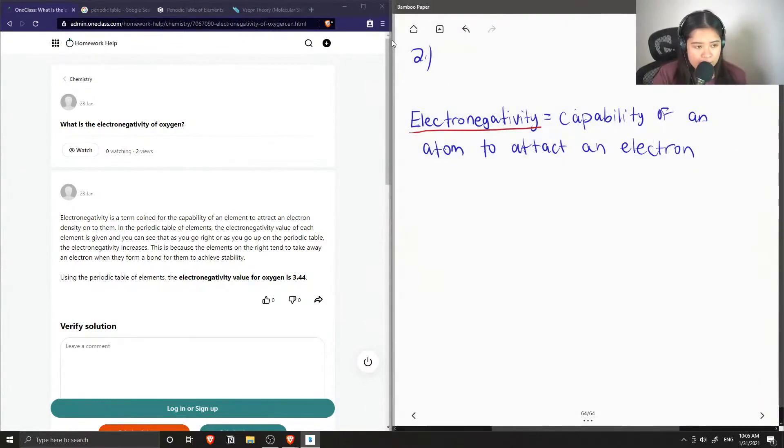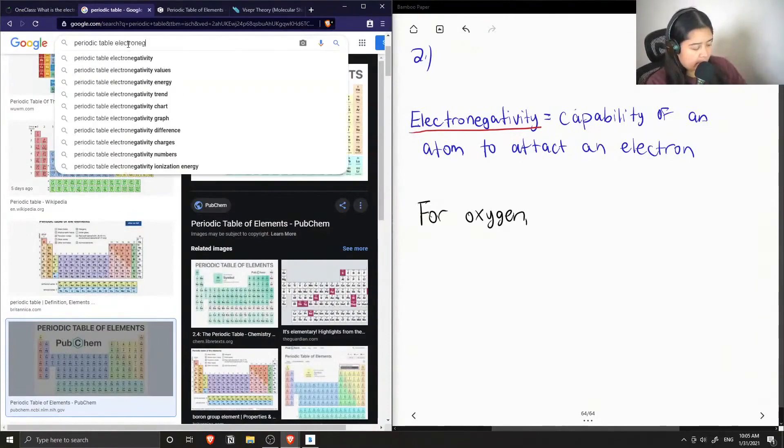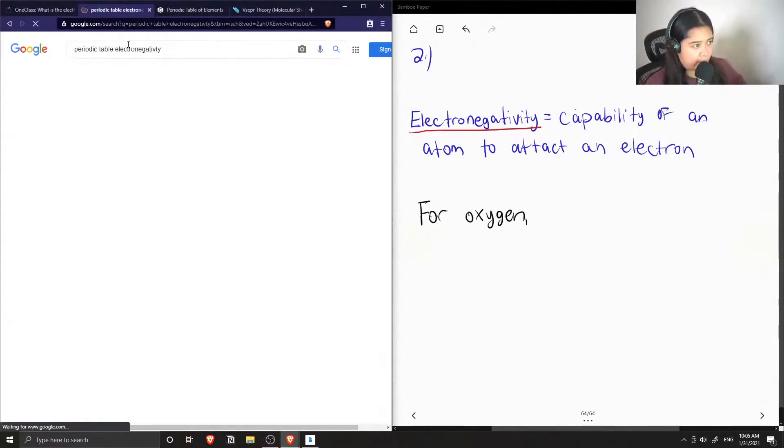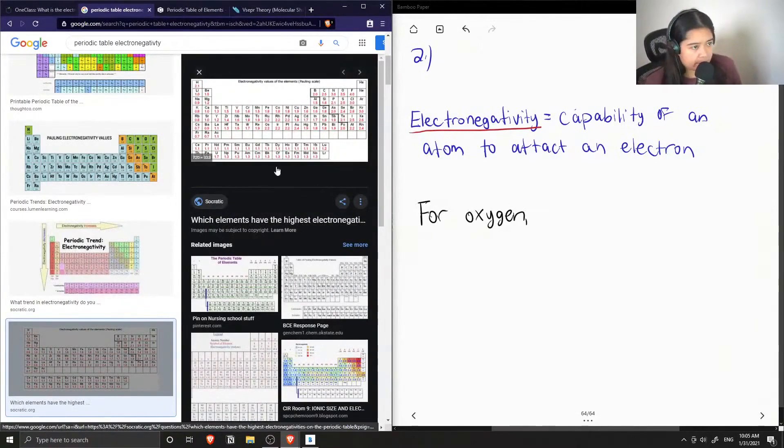Okay, so for oxygen, we can look at a periodic table that shows all the different electronegativity values. So here's one for example—you can see that oxygen's is 3.5